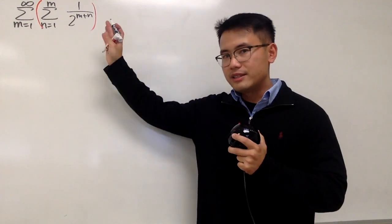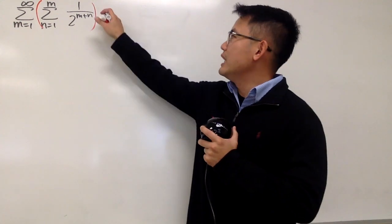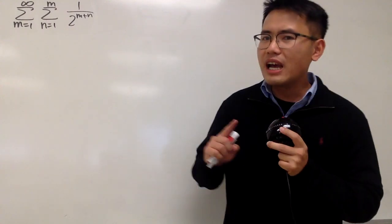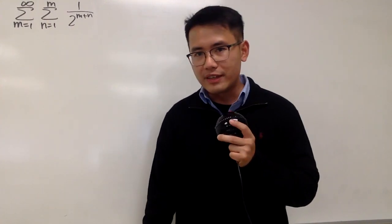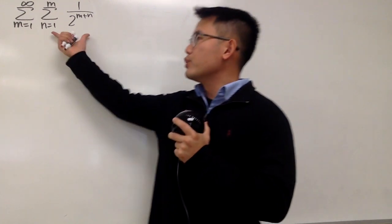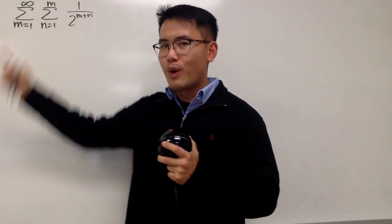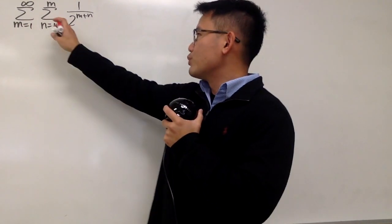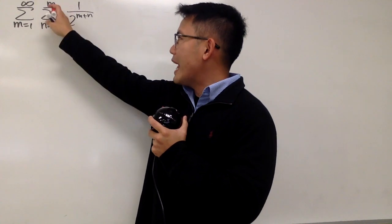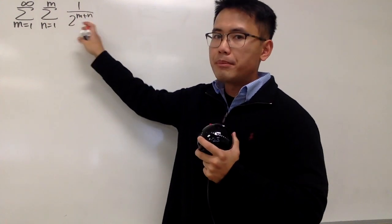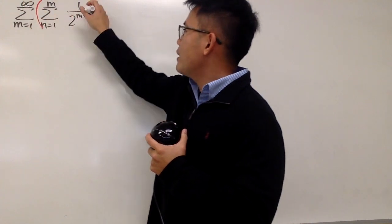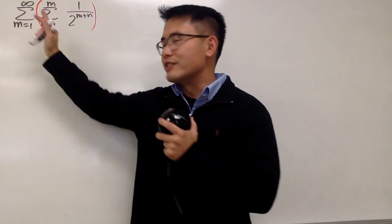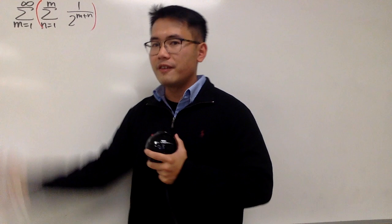Let's do some math for fun. Here I have this double summation. Whenever we have a double summation, be sure we do the inner part first, and then the outer one. So first we have the sum as n goes from 1 to m, and then we have 1 over 2 to the m plus n power. Then we do the sum as m goes from 1 to infinity.